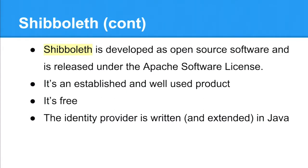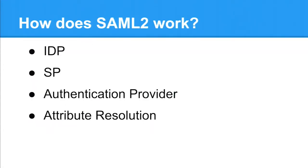The funding model is quite interesting - you can choose to enter into the Shibboleth consortium and provide funding for the developers, because it costs quite a lot to develop this software. But no one actually owns it, which is quite unusual. It's an established, well-used product and it's free - as in beer. The identity provider, the piece of code responsible for authenticating and returning attributes, is written in Java and extended in Java as well. The service provider component is an Apache plugin called ModShib, written in C or C++.